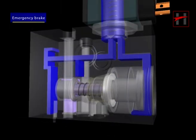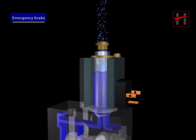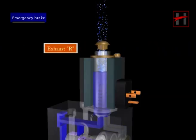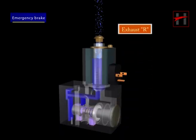The control pressure bearing on piston C is discharged through exhaust R. As the control pressure is vented through exhaust R,